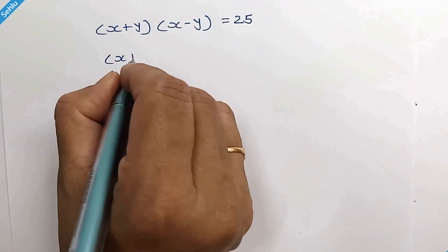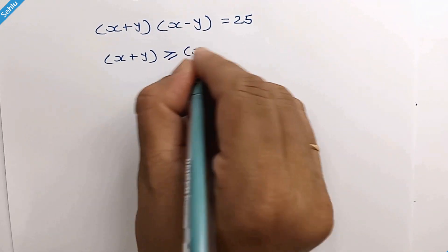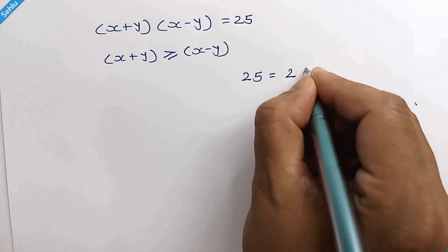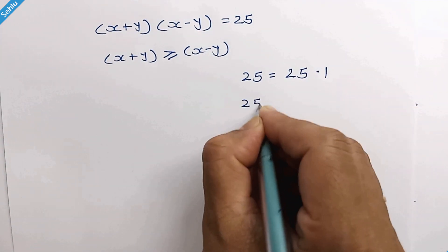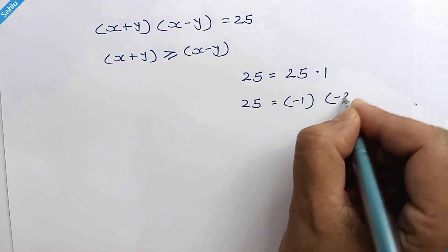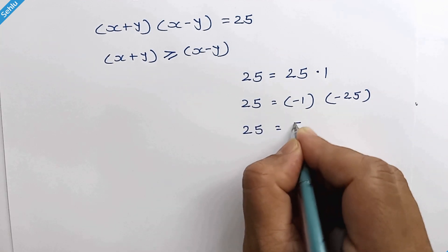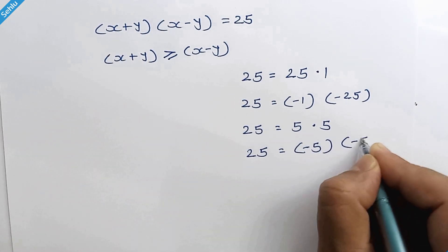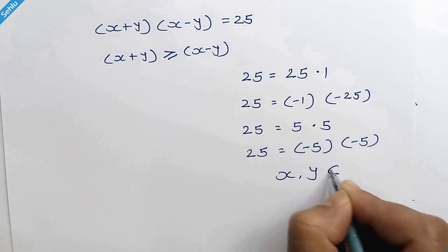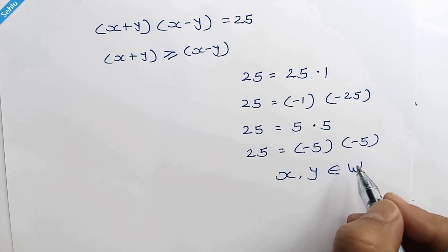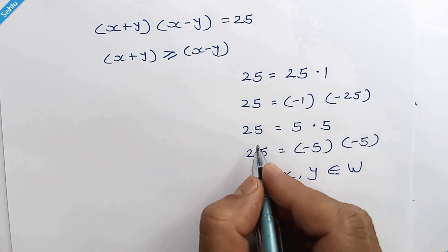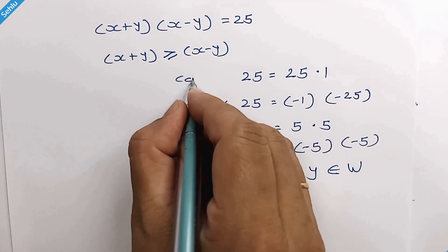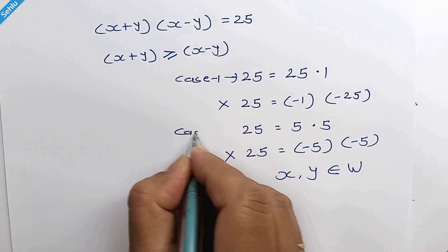Here, x plus y is greater than or equal to x minus y. In relation with the left hand side, 25 can be factorized as 25 times 1, negative 1 times negative 25, 5 times 5, and negative 5 times negative 5. Since x and y are whole numbers — meaning all positive integers including 0 — we will not consider the negative factors of 25. So we can consider 2 cases.